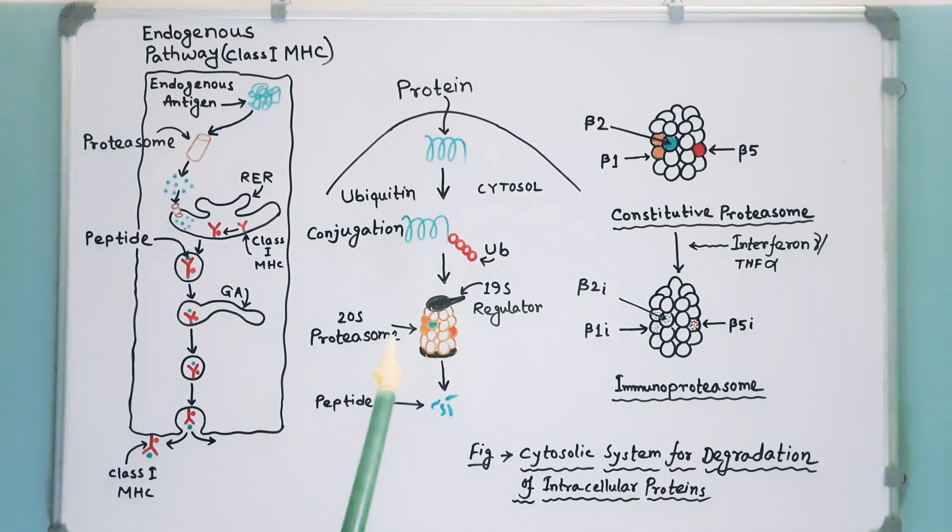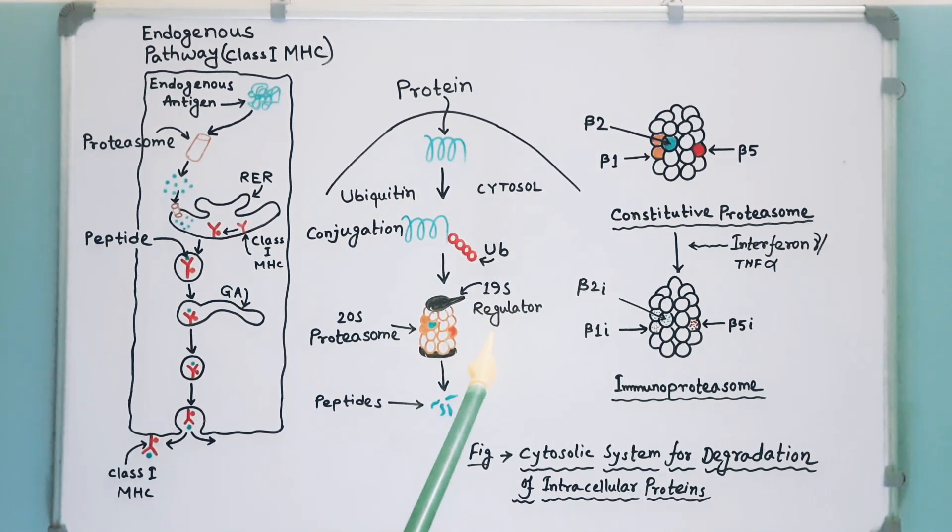This proteasome is composed of alpha and beta subunits arranged in a barrel-like structure of symmetrical rings. It has a 19-S regulatory component. This proteasome is also known as standard or constitutive proteasome.